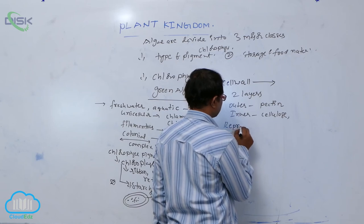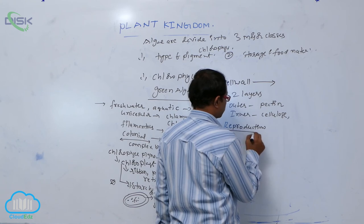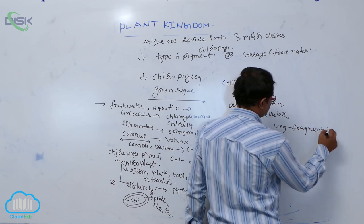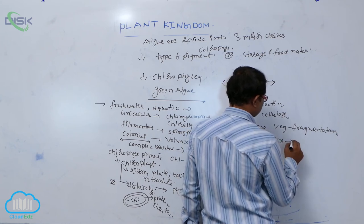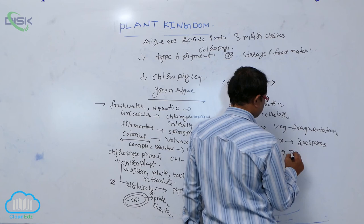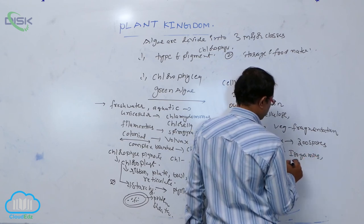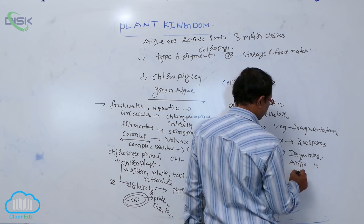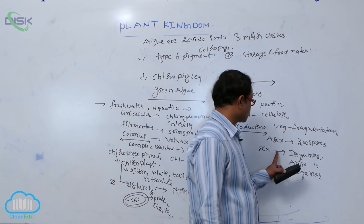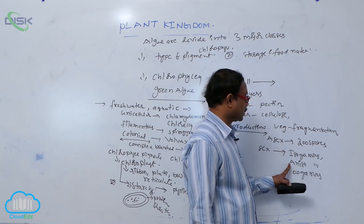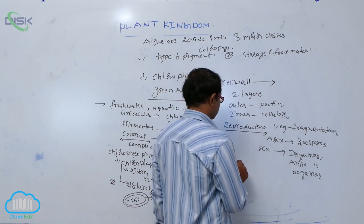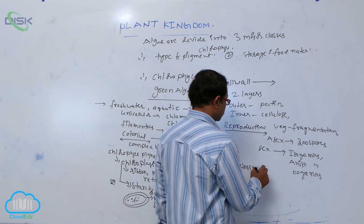Reproduction in Chlorophyceae: vegetative reproduction occurs by fragmentation. Asexual reproduction takes place by zoospores, which are motile spores. Sexual reproduction takes place by isogamous, anisogamous, and oogamous methods. Meiosis occurs in the zygote.